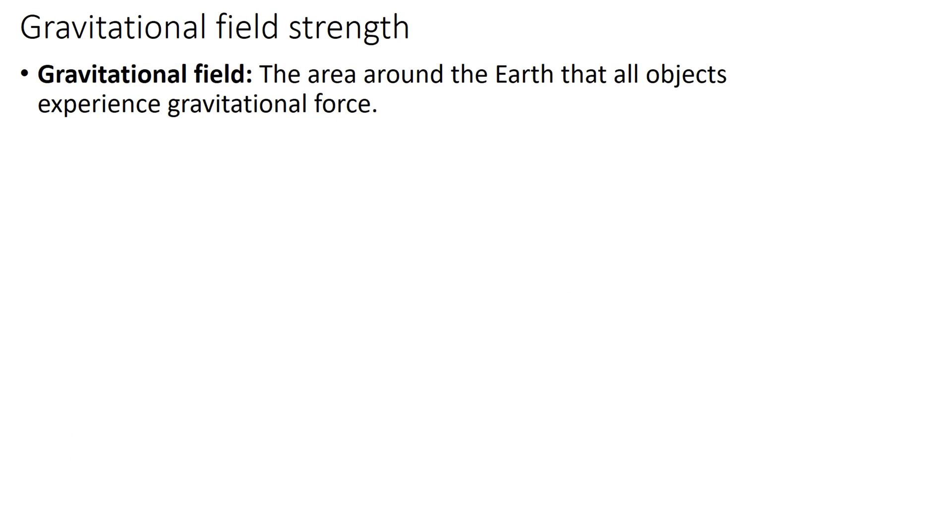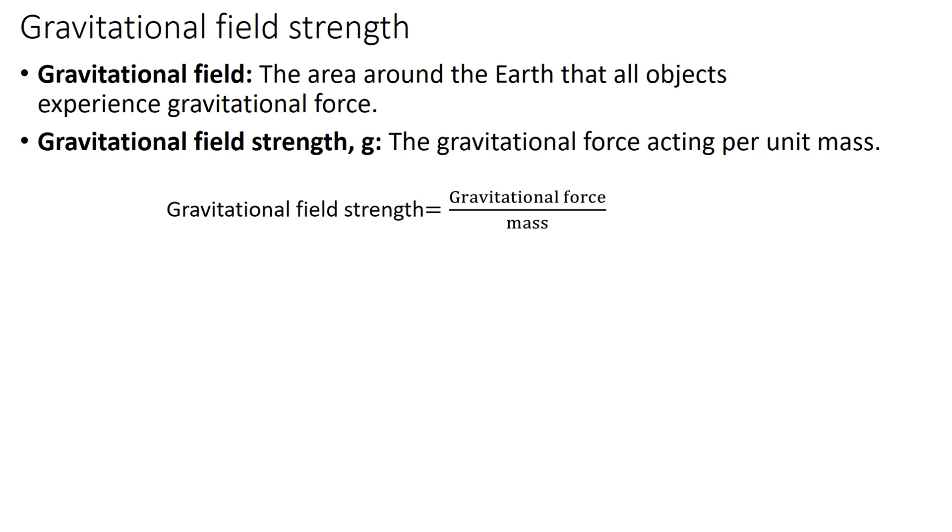Gravitational field strength. Gravitational field is the area around the earth that all objects experience gravitational force. Gravitational field strength g is the gravitational force acting per unit mass. Hence, gravitational field strength equals gravitational force over mass: g equals Fg over m. Hence, the weight W is mass times gravitational field strength where W equals mg.